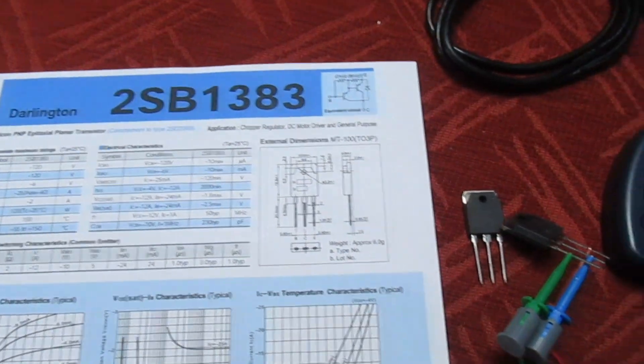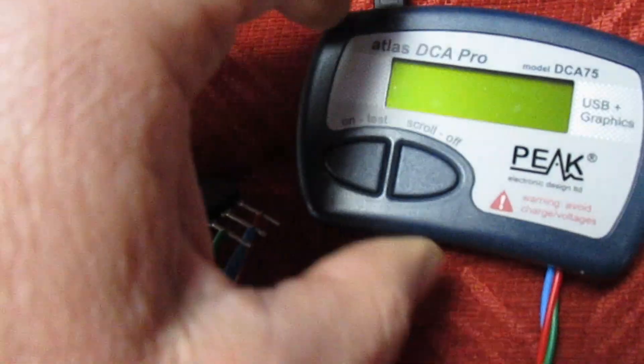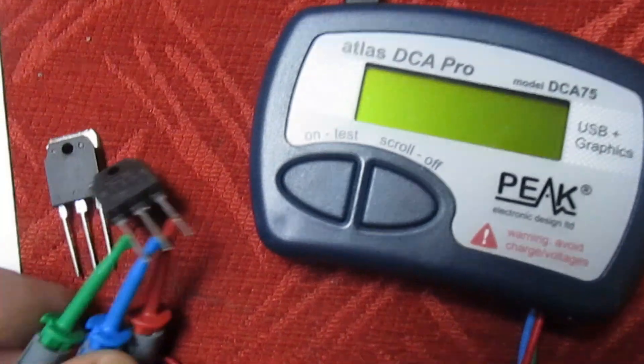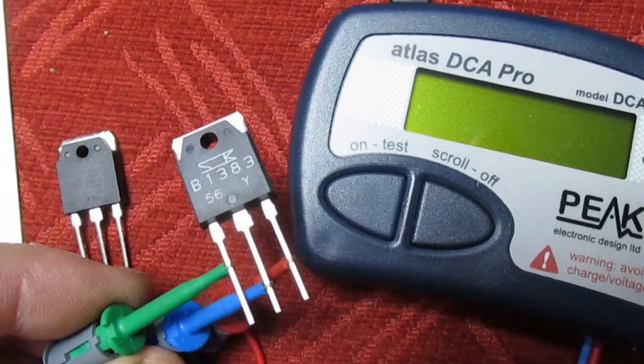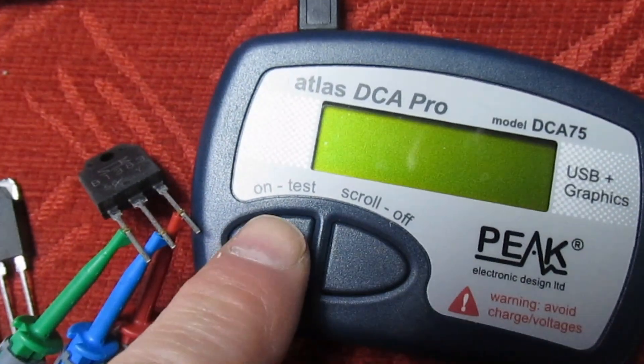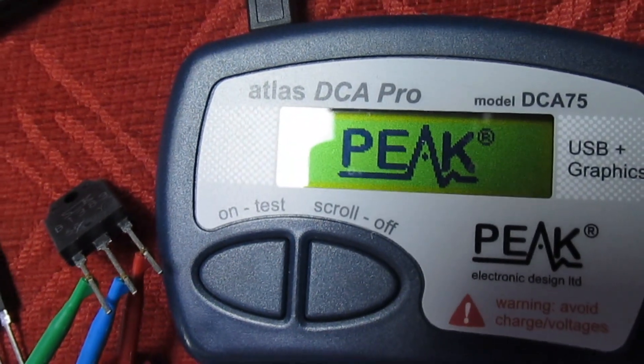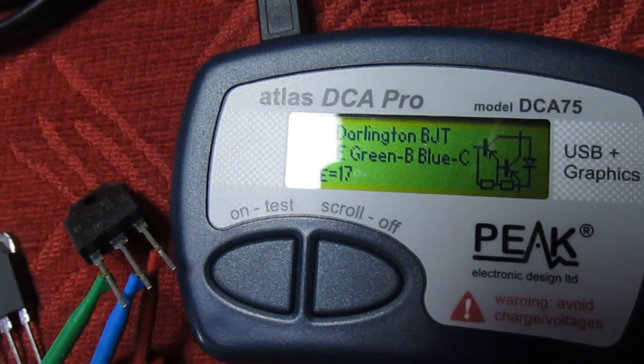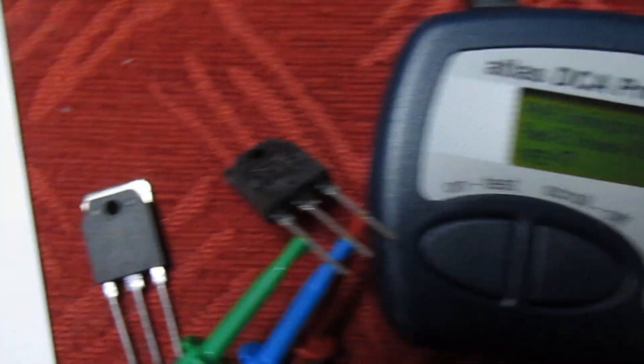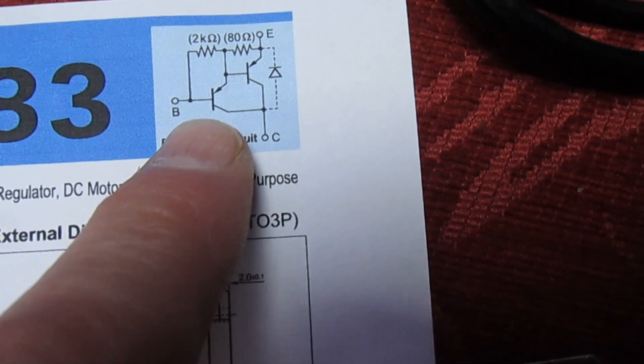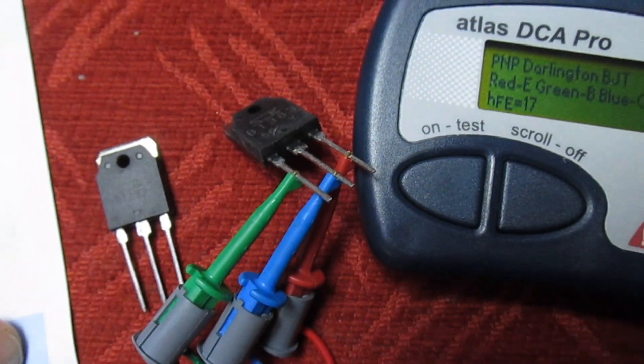Let's try the 2SB one. We'll do it on this test because I can hold the camera at the same time. You can see we've got the genuine one in there first, and that once again comes up with a Darlington configuration of two resistors, two diodes, just like it says on the data sheet.